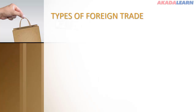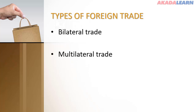Types of Foreign Trade: We have two types of foreign trade. Bilateral trade is a trade agreement in which two countries exchange goods and services, for example Nigeria and Ghana. We also have multilateral trade, which is the type of international trade where a country trades with two or more countries, for example Nigeria trades with Ghana, USA, Russia, Togo, etc.